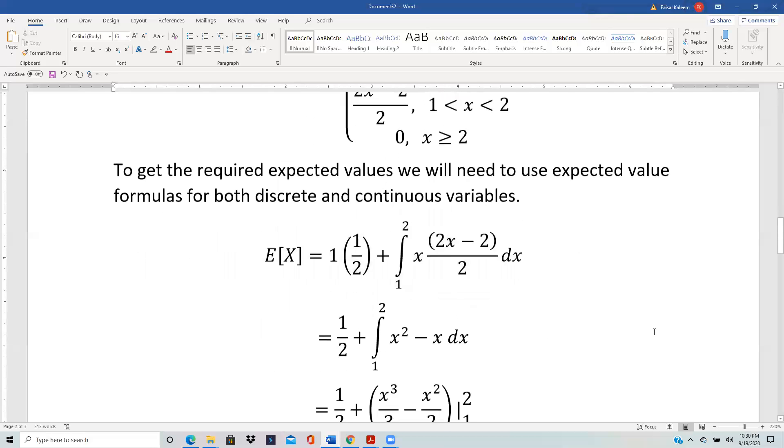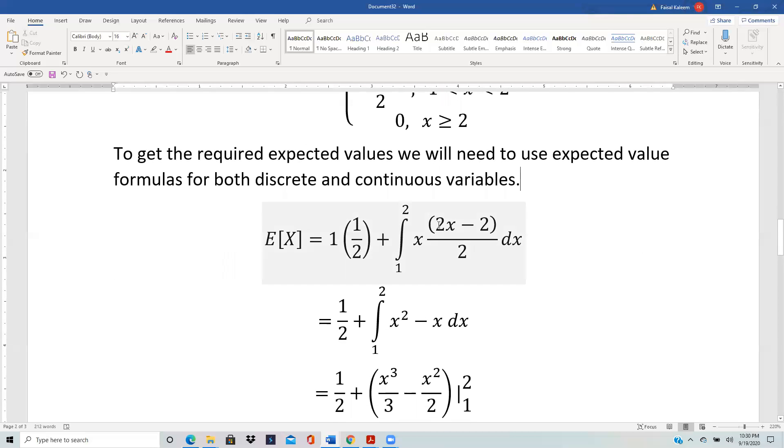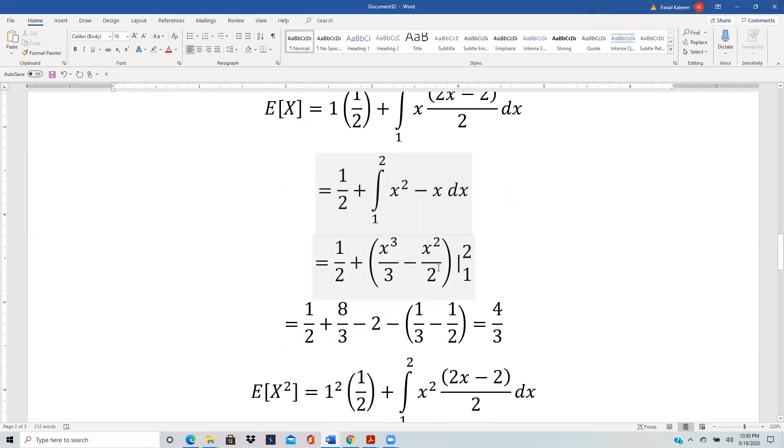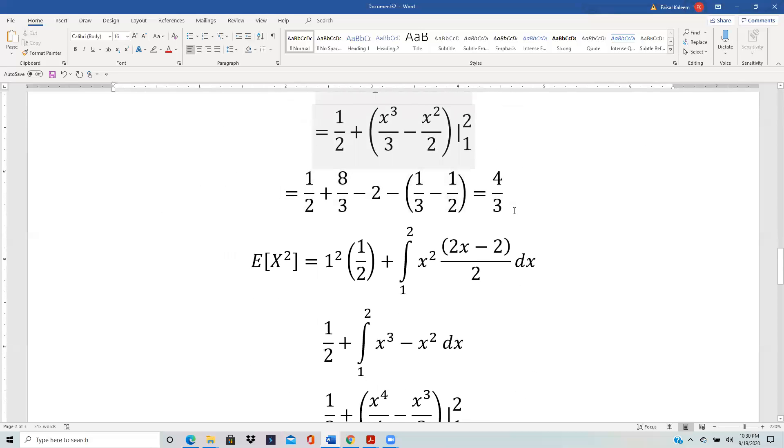So from 1 to 2, and then the twos cancel out here and you end up with x² - x, and then when you integrate it you get 4/3.